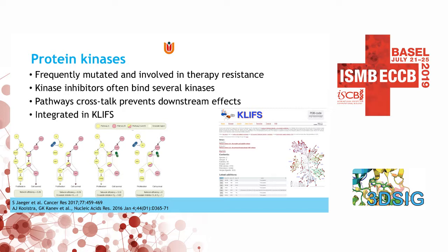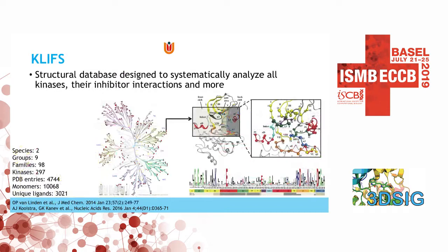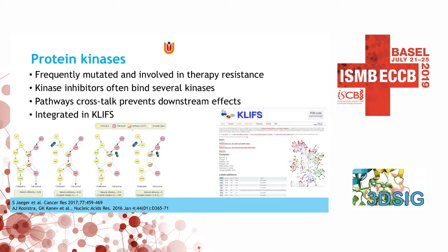Protein kinases are frequently mutated, especially in diseases like cancer. I believe PI3K is the most mutating gene in cancer and they are typically involved in therapy resistance. Kinase inhibitors are known to bind to several kinases because the ATP binding site is highly conserved, which makes it almost impossible for a kinase inhibitor to inhibit only a single protein kinase and none of the rest.